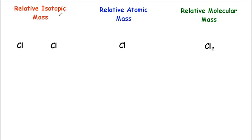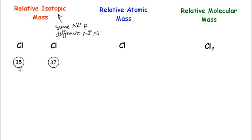An isotope is a form of an element which has the same number of protons but different numbers of neutrons. For example, the two isotopes of chlorine are chlorine-35 and chlorine-37. Chlorine-35 has 35 things in its nucleus — protons and neutrons — and chlorine-37 has 37. These are both found in nature but in different abundances: chlorine-35 makes up 75% of all chlorine in nature, and chlorine-37 makes up 25%.